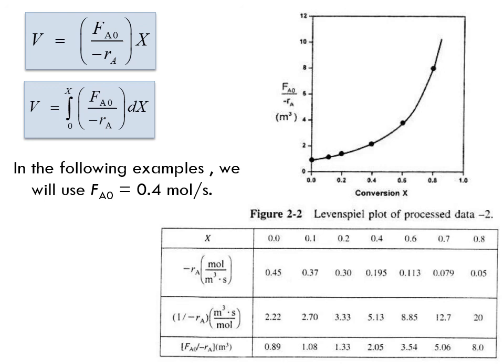In the following example, we will design CSTRs and plug flow reactors for a case where the entering molar flow rate FA0 is 0.4 mol per second. Since FA0 appears in both the CSTR and PFR design equations, we will calculate a fourth row in the table: FA0 over minus rA. We are now ready to design some reactors — we'll meet you in segment three to do so, stay tuned.